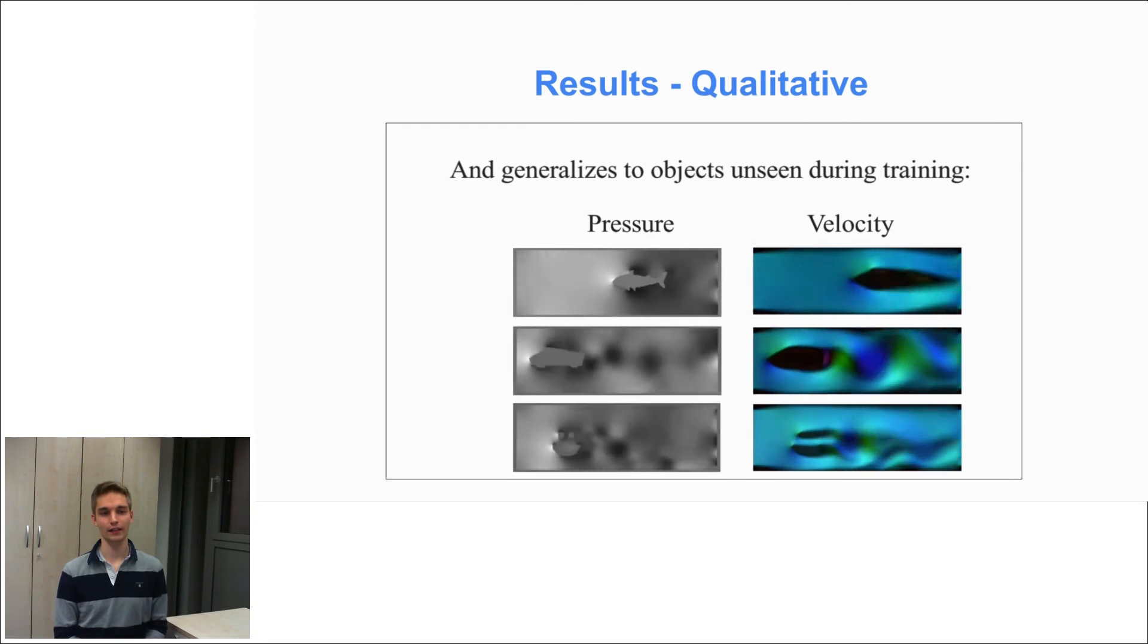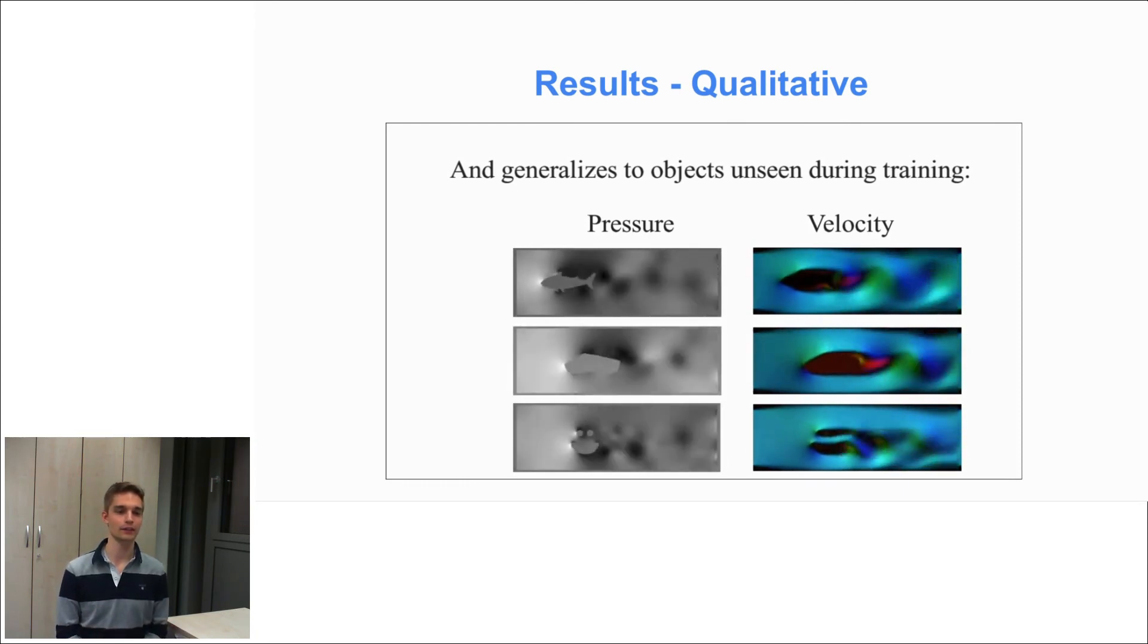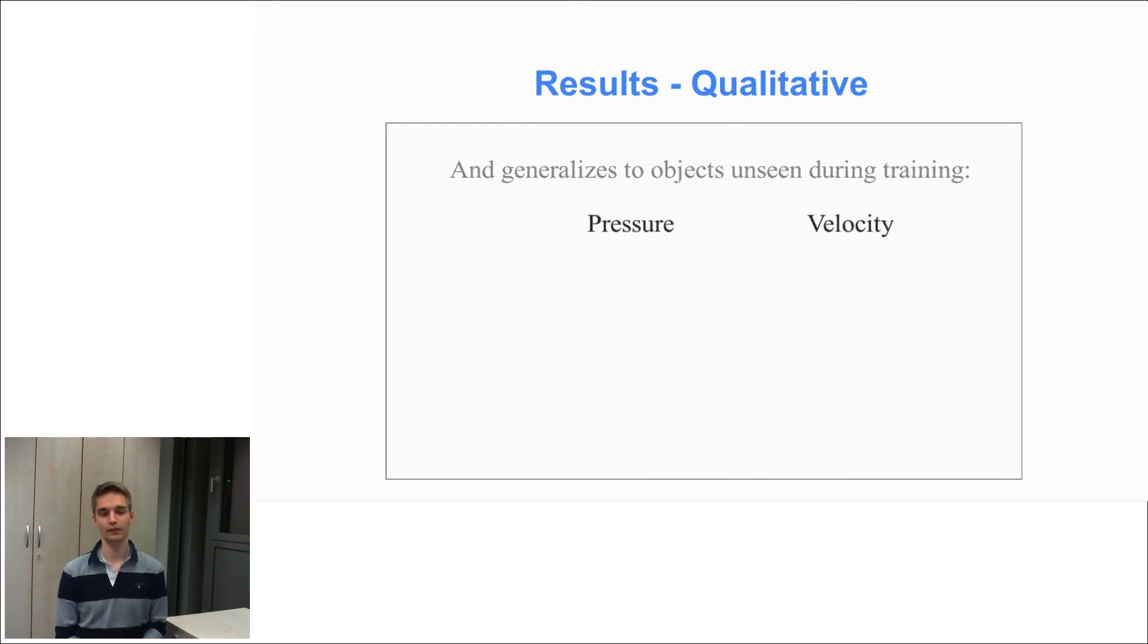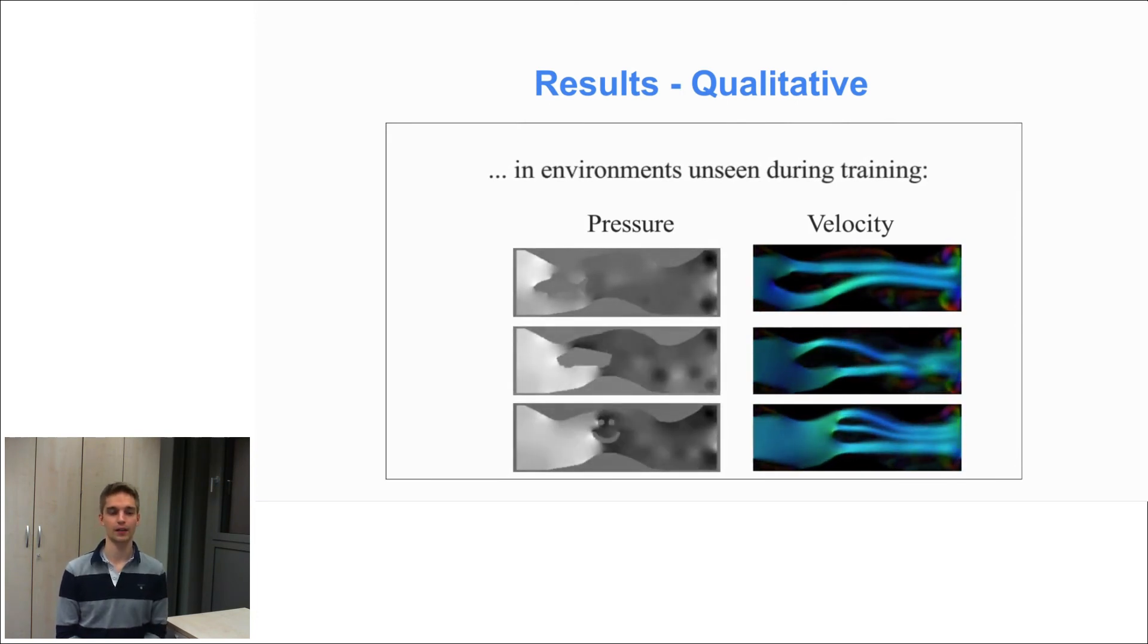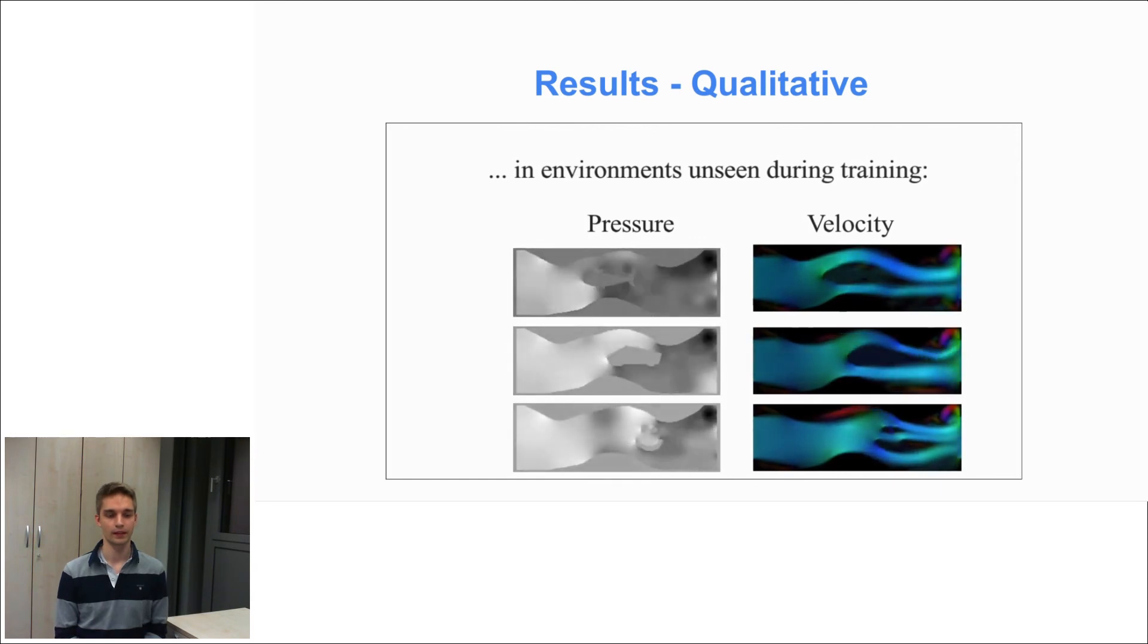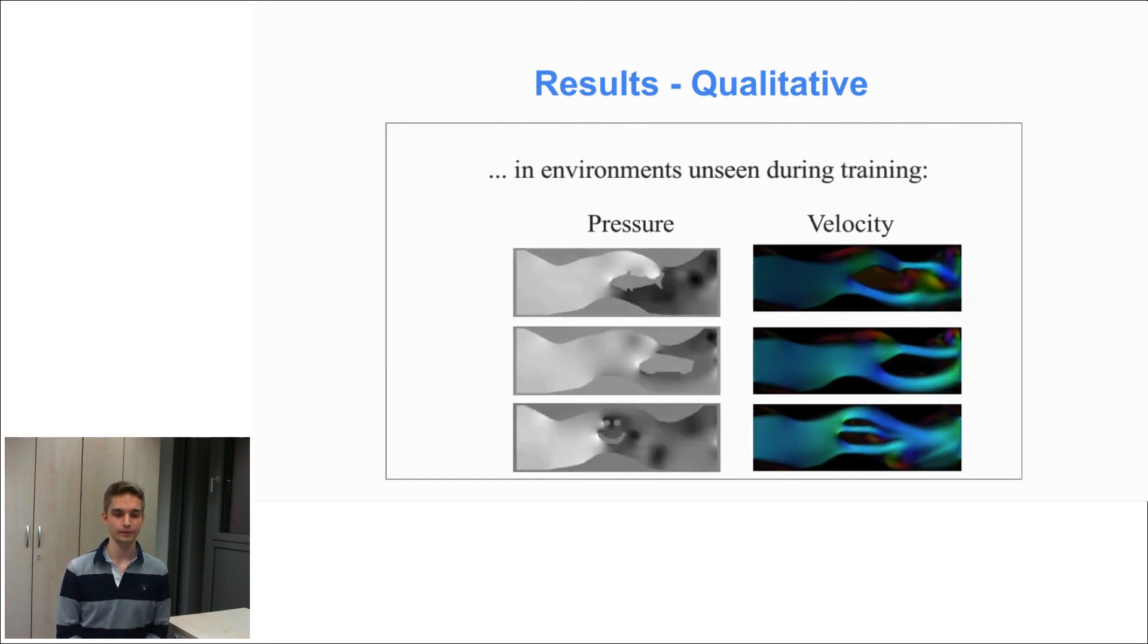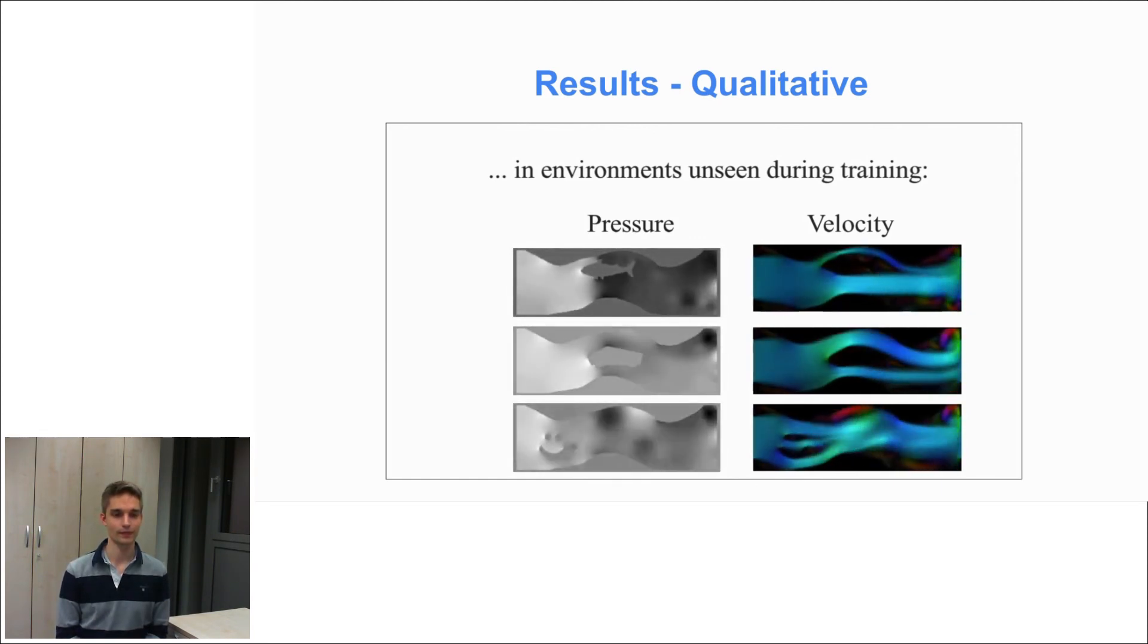Our models also generalize to new objects which were never covered during training. On the top, for example, this fish shape or here the car shape or the smiley shape on the bottom.